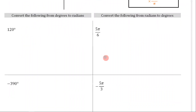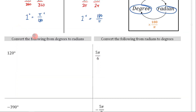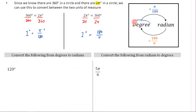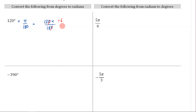Let's go through these examples. First, convert 120 degrees to radians. Since we're going from degrees to radians, we multiply by π/180, giving 120π/180. Cancelling the zeros and then dividing both 12 and 18 by 6, we're left with 2π/3. So the answer is 2π/3.